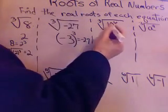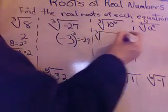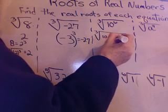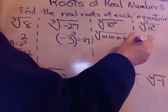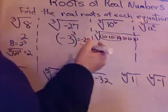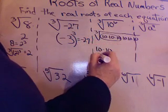All right. What about the cube root of 10 to the 6th? One way to think about that, how many 10s would I have? Six of them. And every time I have 3, I can take a 10 out. So 10 times 10, 100.